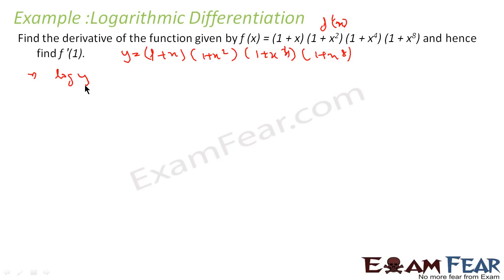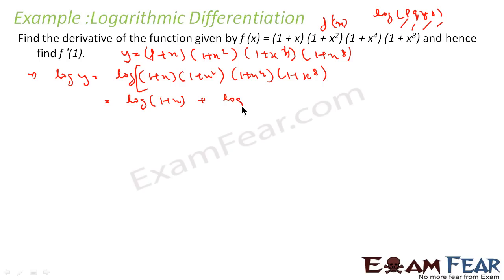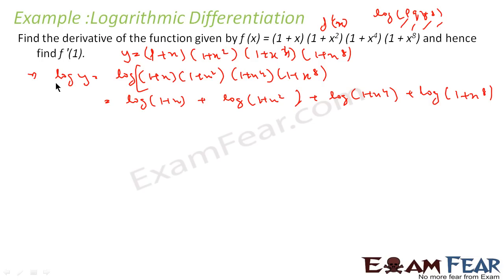Applying log on both sides, I get log y as nothing but log of the whole thing — that is log of (1+x)(1+x²)(1+x⁴)(1+x⁸). This is of the form log(P·Q·R·S), which equals log P + log Q + log R + log S. So this becomes log(1+x) + log(1+x²) + log(1+x⁴) + log(1+x⁸).